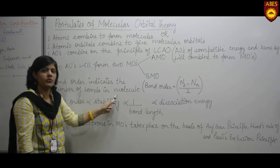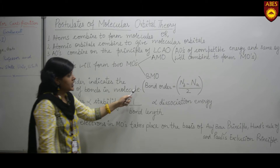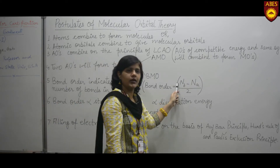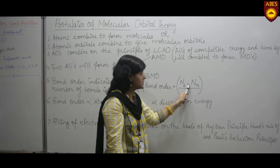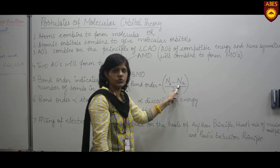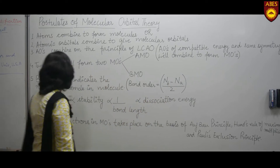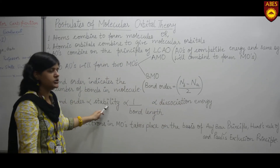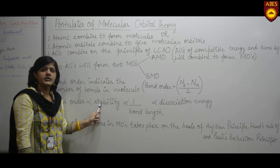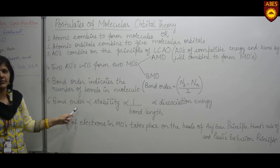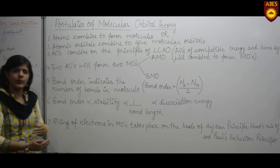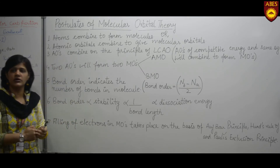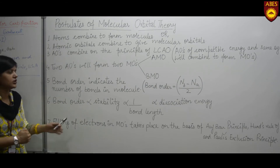Bond order is calculated as: number of bonding electrons in molecular orbitals minus number of anti-bonding electrons, divided by two. Bond order is directly proportional to the stability of the molecule, which means the bond order signifies stability. Higher the bond order, higher the stability of the molecule, and lower the bond order means lower the stability.